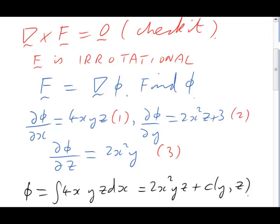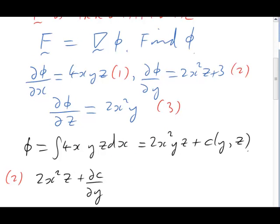Our next step is to take this phi and substitute it into the next equation, number 2. That means we'll have to calculate the left-hand side, d phi by dy. That's easy enough. It's just 2x squared z plus dc dy. We have to insist that this left-hand side is equal to the right-hand side of number 2. That's 2x squared z plus 3. It's clear that the 2x squared z's cancel, which leaves dc by dy equals 3.